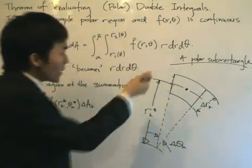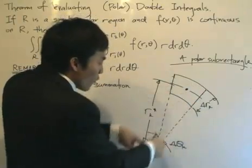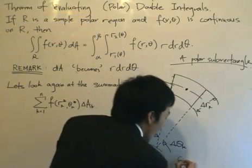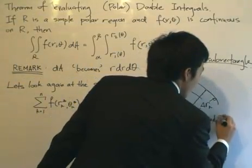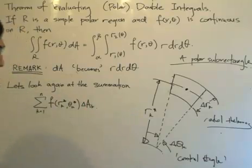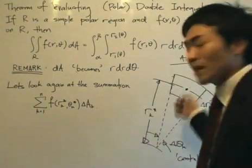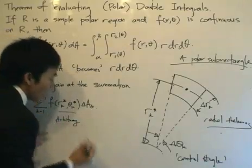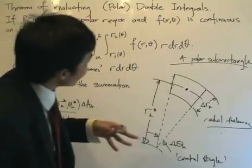Let's introduce some new terms. When we define the sub-rectangle, we say the rays that confine the sub-rectangle — these two rays — form an angle. This is called the central angle: the angle subtended by the two rays. Then there is the radial thickness of the polar sub-rectangle, which is important because we want to find an expression for the area of this sub-rectangle.